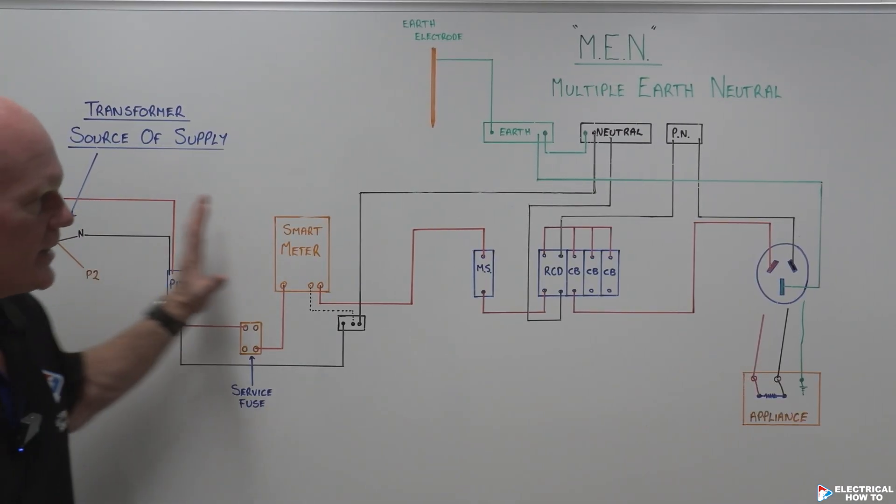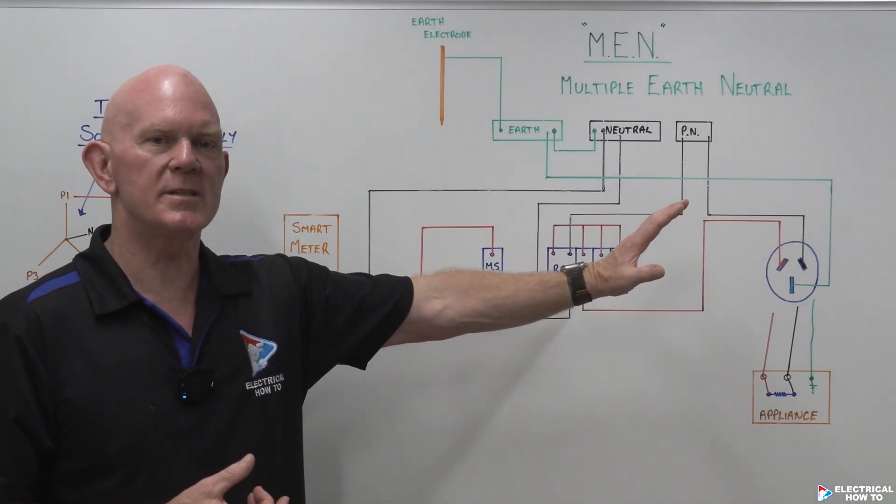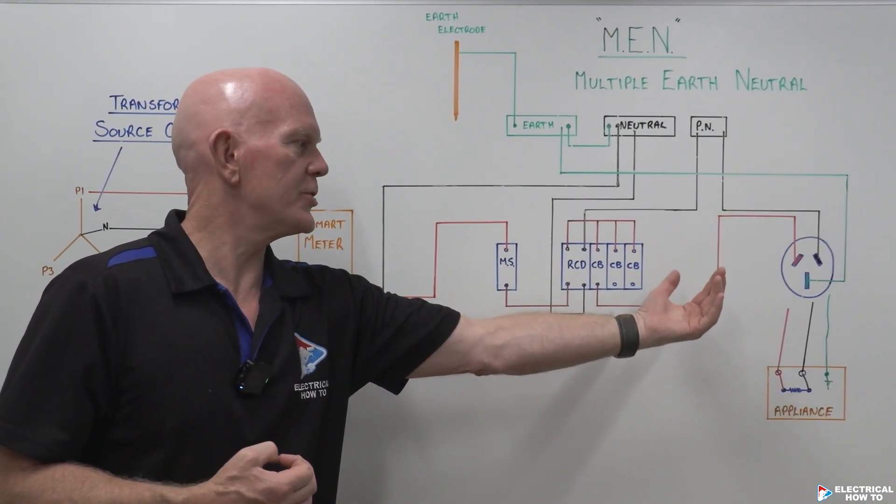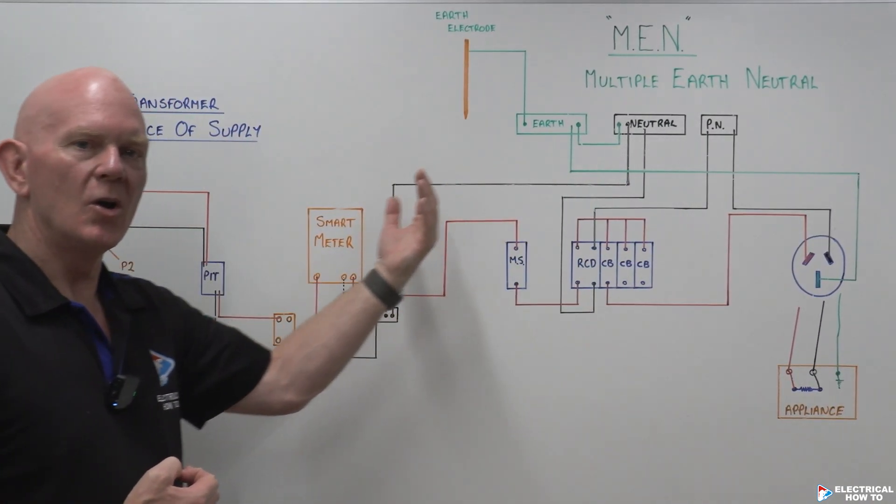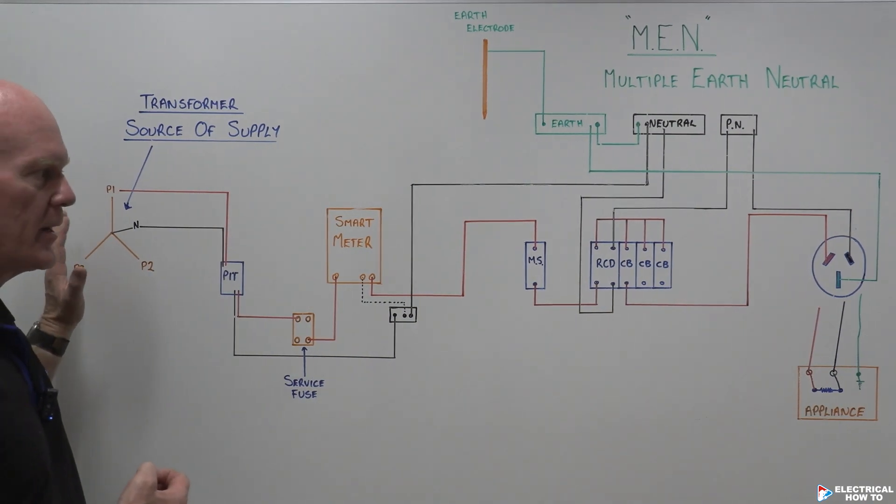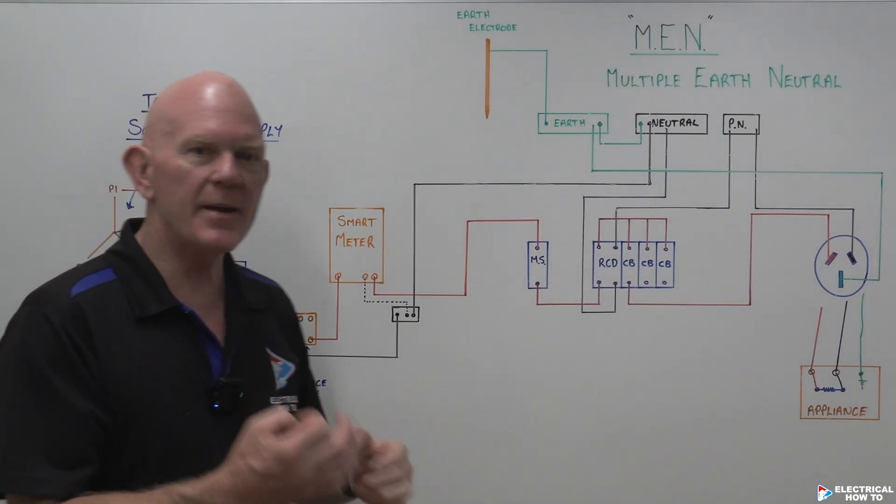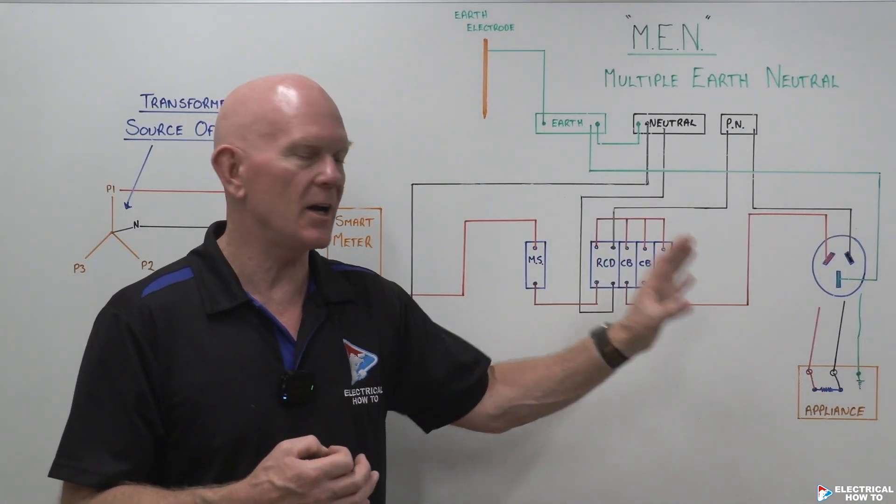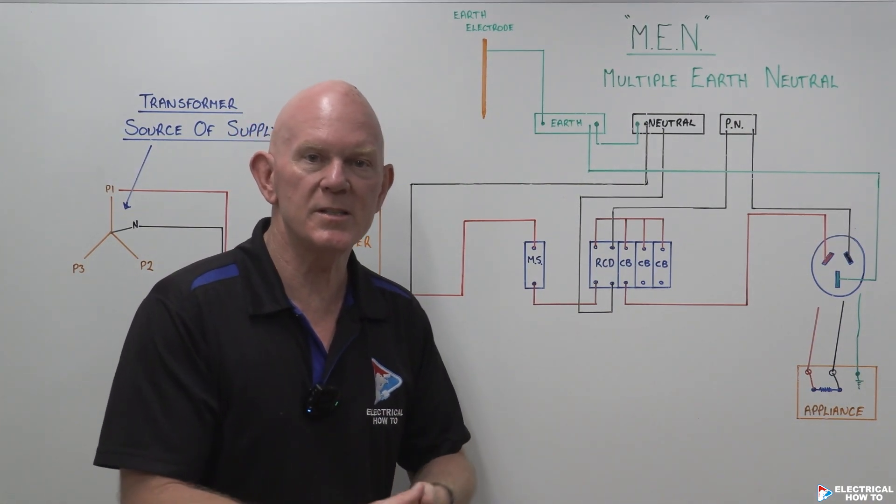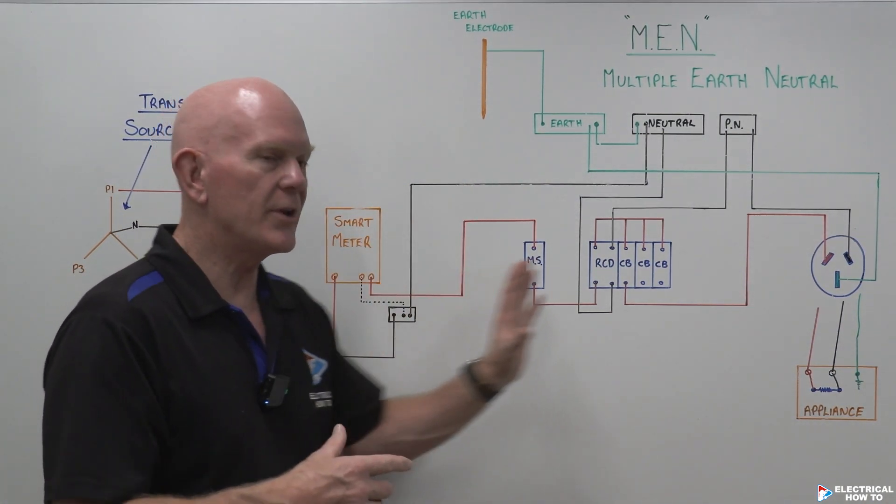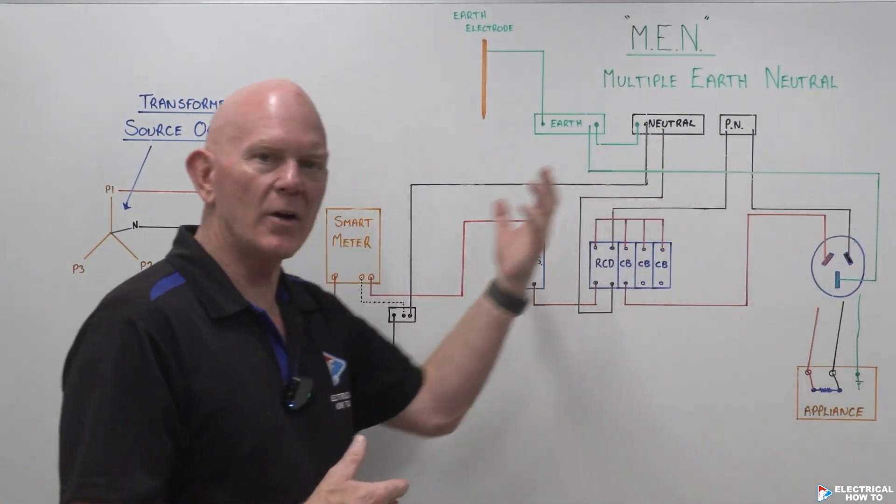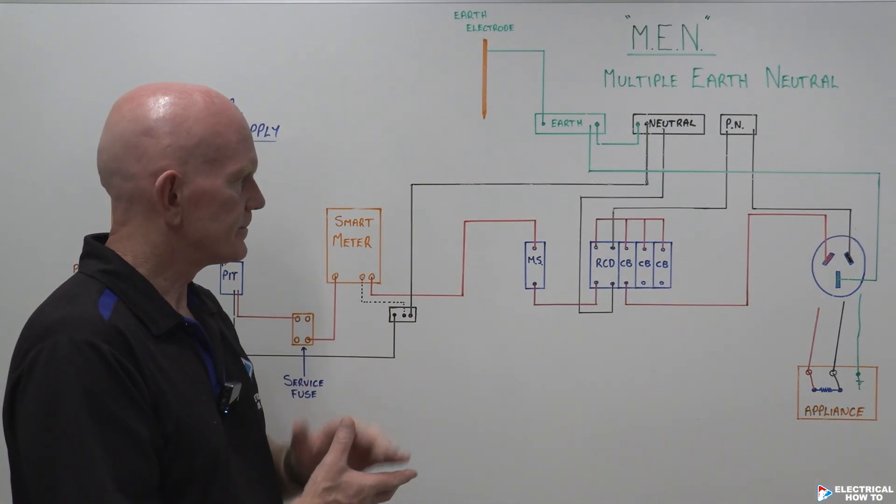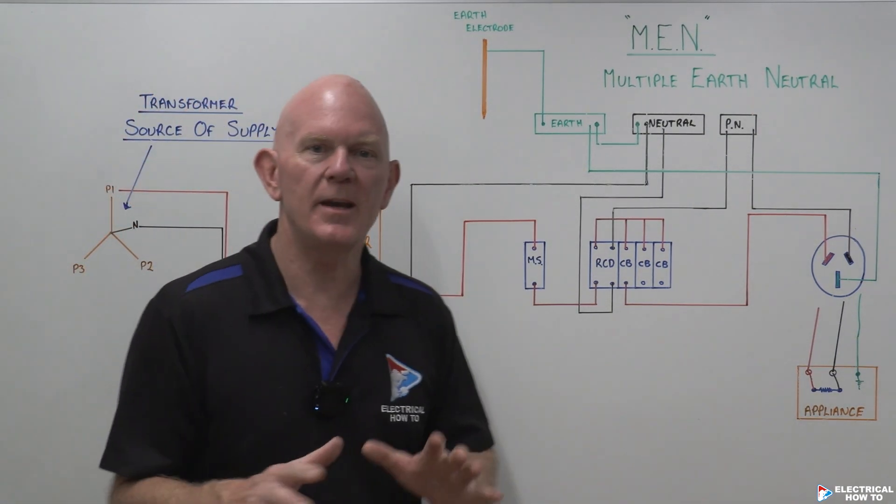So current will flow into the home through the appliance on your active cable and will return back on the neutral cable, all the way back to the source of supply. And this will happen every time you plug something in a home, whether it's an appliance or a light fitting. Current will flow in and will flow out on the neutral cable. Everything's happy, everything's good.